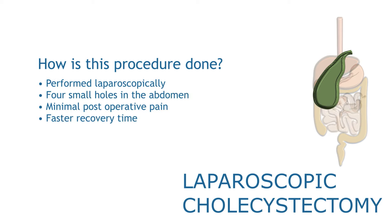The gallbladder is then freed of any scar tissue which may be present from previous episodes of acute cholecystitis. A small incision is made either in the gallbladder itself or in the cystic duct to allow insertion of a small tube or catheter. Dye is injected through this catheter to allow visualization of the ducts and to ensure that no stones are present within the bile duct on an x-ray screen.